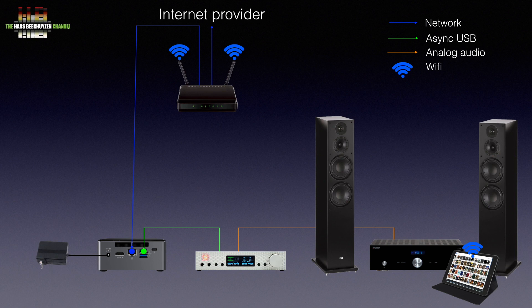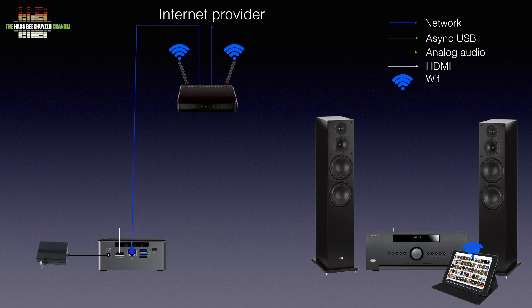Only when you want to use an AV receiver that has HDMI inputs might you try to connect the NUC to the receiver using HDMI. Although audio is transported within a video signal, good AV receivers manage to straighten the signal and so offer a decent sound quality. So we now have two scenarios: the Intel NUC running Roon Rock connected over async USB to a DAC, or the Intel NUC running Roon Rock connected over HDMI to an AV receiver.